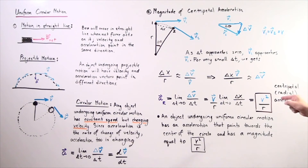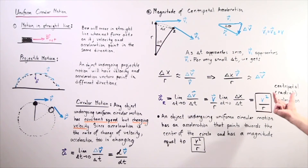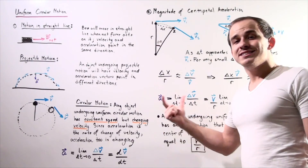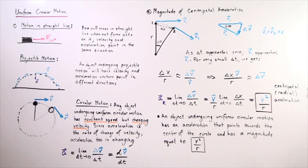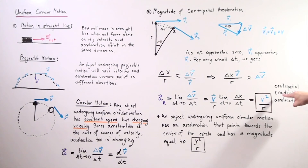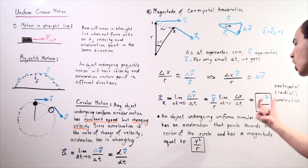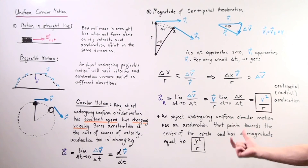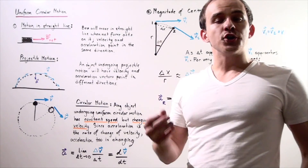The magnitude of the radial acceleration depends on the velocity of the object and the radius of the circle. If velocity increases, acceleration increases. If radius increases, acceleration decreases. In summary, an object undergoing uniform circular motion has an acceleration — called radial or centripetal acceleration — that points towards the center of the circle and has a magnitude equal to v² divided by r.